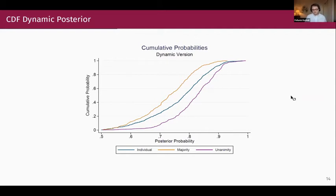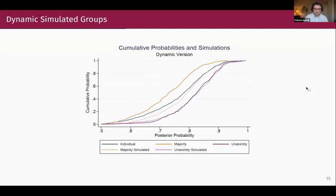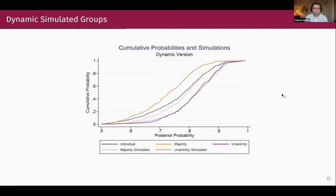To address this, we simulated groups from the individual-level treatment data — creating random groups of three, and simulating unanimity using the most demanding vote, and majority using the second most demanding. For unanimity, the simulated and observed distributions barely differ; the Kolmogorov-Smirnov test fails to reject that they are the same distribution. So unanimity is more demanding than the individual treatment, but only because of the mechanical effect that the most demanding person drives decision-making.